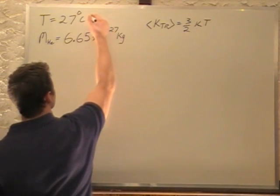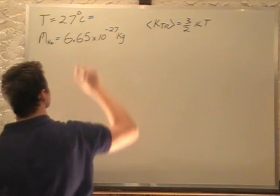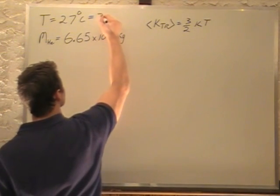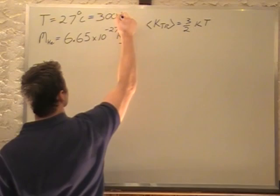T, as always, has to be in Kelvin. 27 degrees Celsius, so if we add 273 to that, it gives us 300 Kelvin.